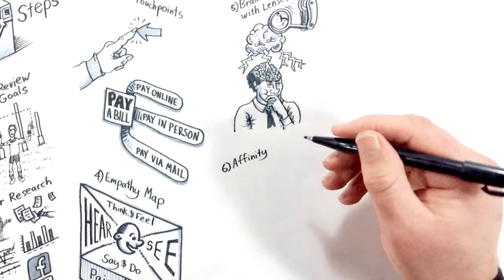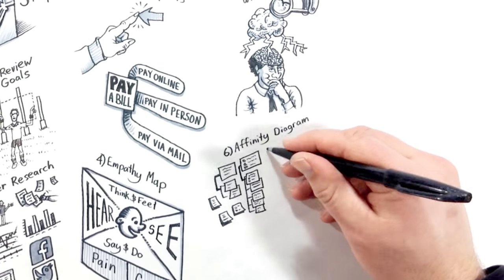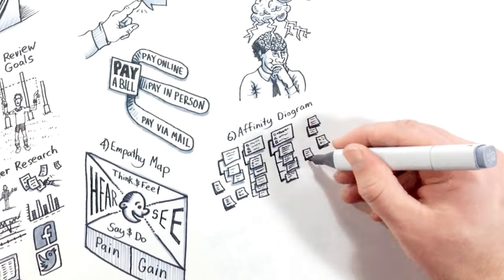Number six, complete an affinity diagram where we organize ideas and find cohesion in the team's concepts. It helps us focus on the right solutions for this audience.